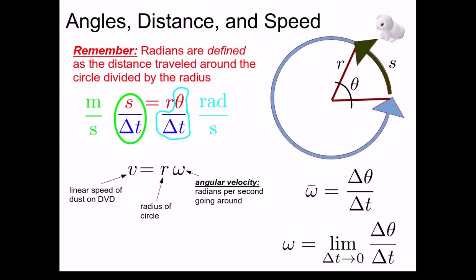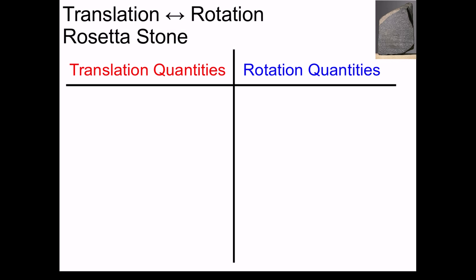These expressions should look fairly analogous to our expressions for velocity. In fact, let's begin to develop a sort of translation book for the quantities for translational motion and rotational motion. A sort of Rosetta Stone for these two different types of motion. So, for translation, we have the fundamental quantity of displacement. For rotation, we have an angular displacement, delta theta.